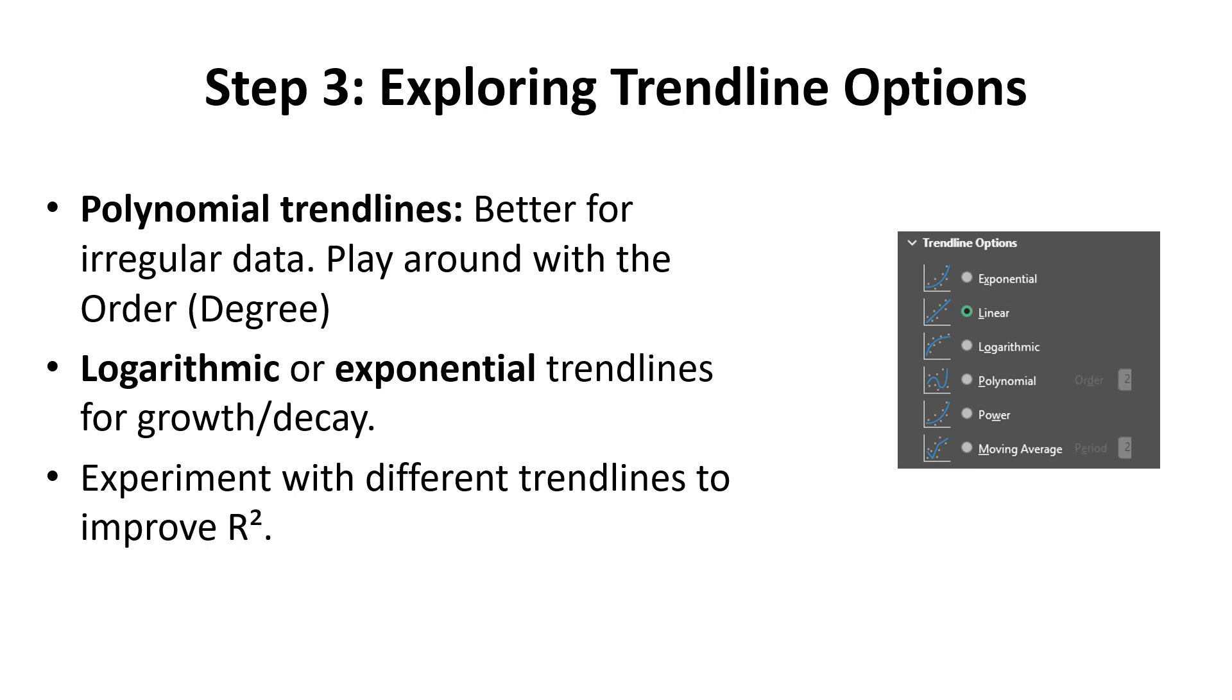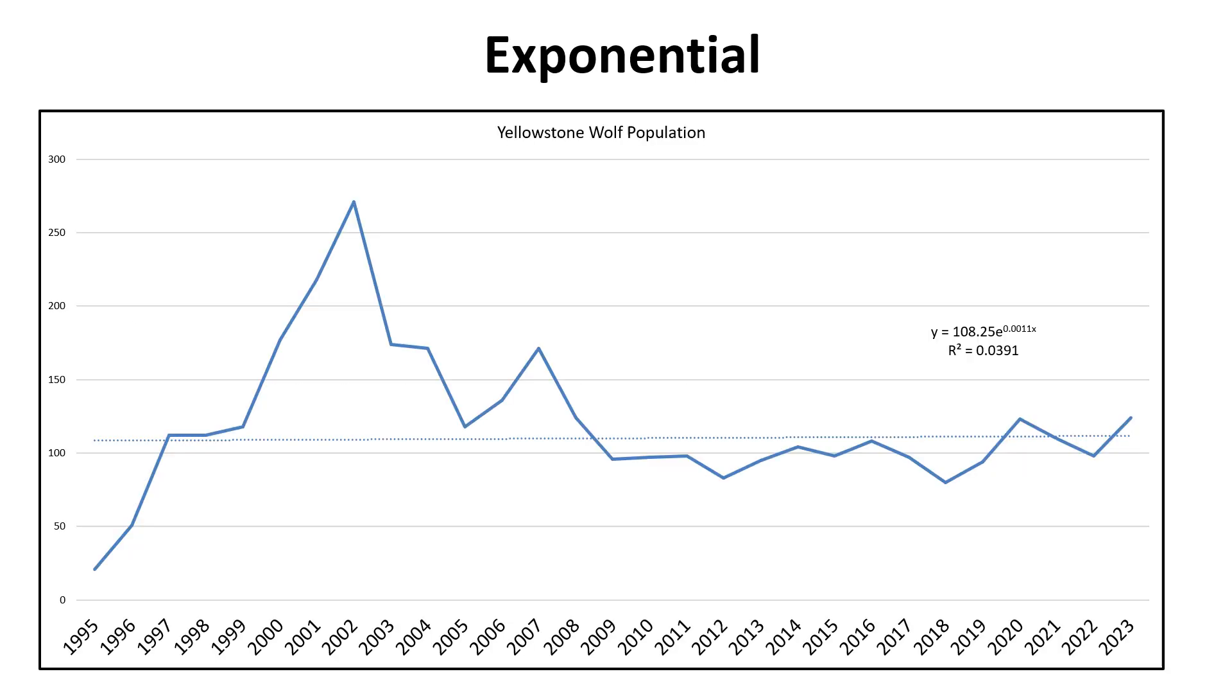Our R-squared value is going to allow us to see how close our trendline is to our data. That R-squared value will be between 0 and 1. Zero is a poor match, one is a very strong match. I'm going to show you using my data how I went through each of these trendline options and we'll look at that R-squared value.